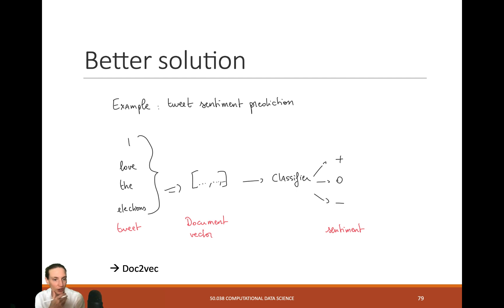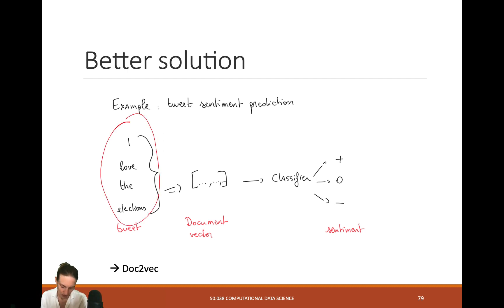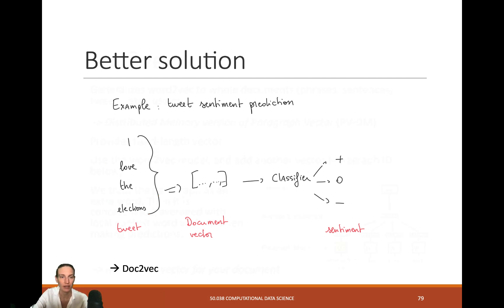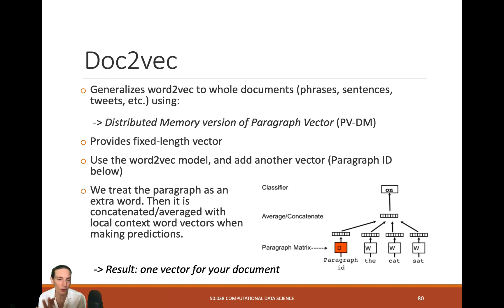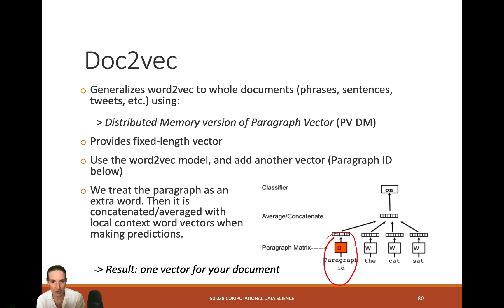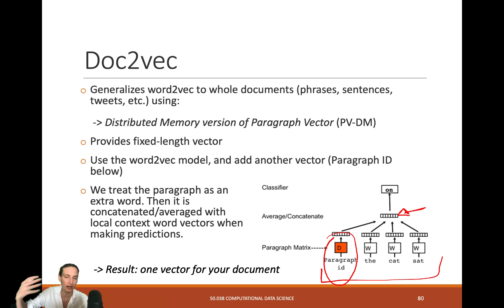A better solution is something called Doc2Vec, which learns an embedding for the whole document — one embedding for the whole tweet — which can then be fed into our classifier. When training Doc2Vec, it works similarly to Word2Vec except we always feed it a paragraph ID or document ID, treated as an extra word during training. This allows the model to learn properties per document. It provides a fixed-length vector which is exactly the embedding you use as output of your Doc2Vec model.